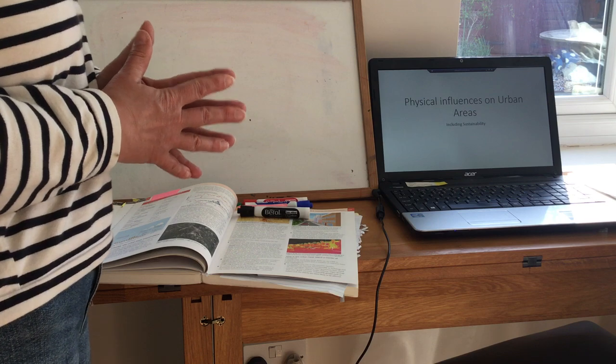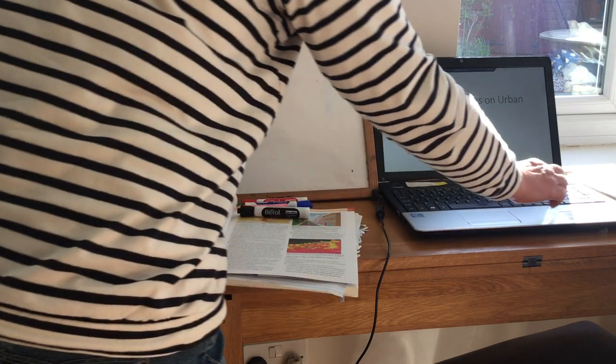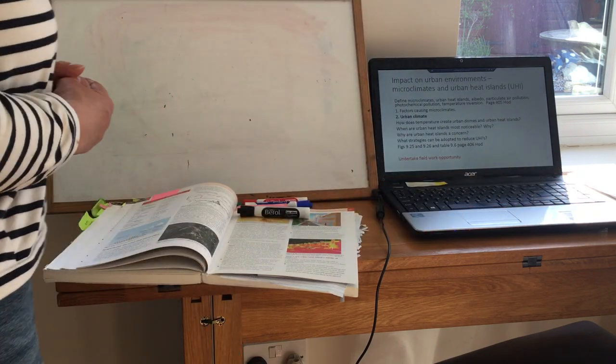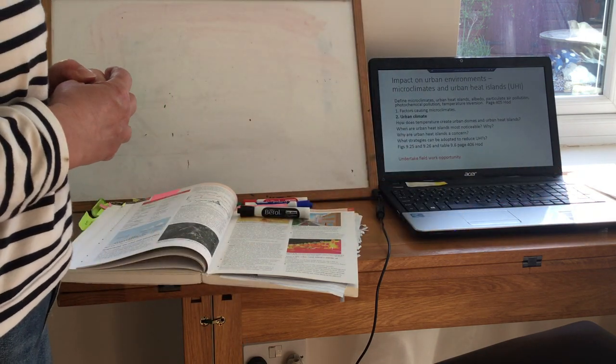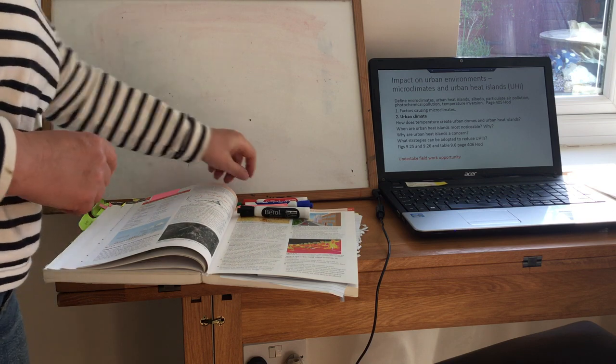So if you remember, the work I set you was the physical influences of the urban area. This is the PowerPoint I put through on showing my homework. The easiest way of understanding urban heat islands and microclimates is just remembering the two principles.